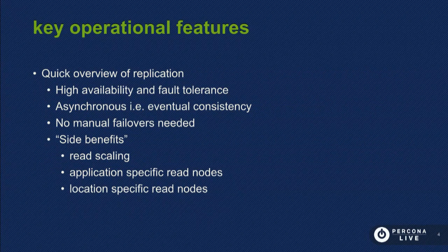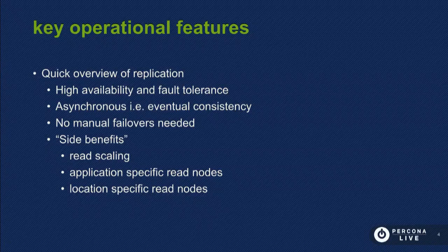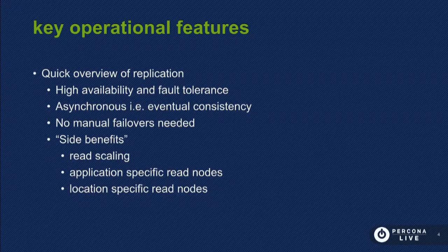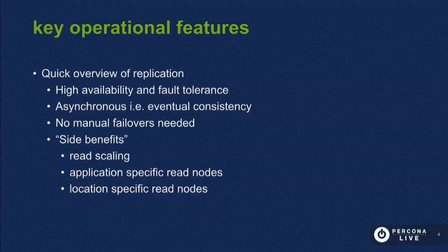I wanted to cover some key features of replication. Since MongoDB is designed to be a distributed database, one of the key things it needs to avoid is a single point of failure, and replication is how it does that. Replication allows high availability and fault tolerance. It uses asynchronous replication of data across the primary and secondary nodes, so you have to be careful not to assume that data is going to be consistent across your cluster at all times. One good thing compared to traditional replication failovers is that there's absolutely no manual intervention needed — it does so transparently to system admins, DBAs, and applications.